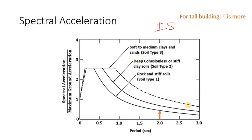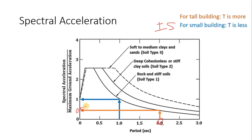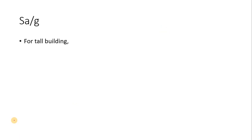From the IS code spectral acceleration graph, for the tall building where T is more — let us assume T equals 2 — the value Sa/g is approximately 0.5. For the small building, since the time period is less, the value Sa/g is approximately 1.